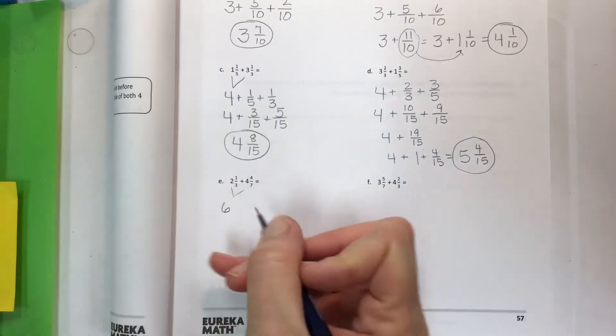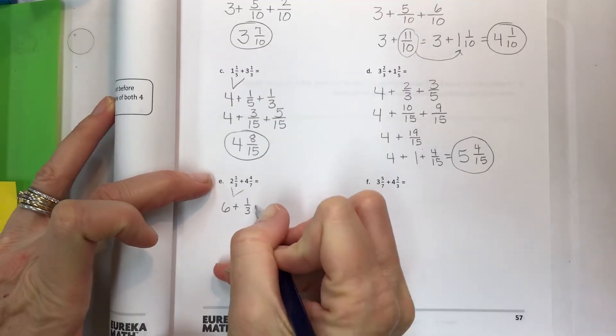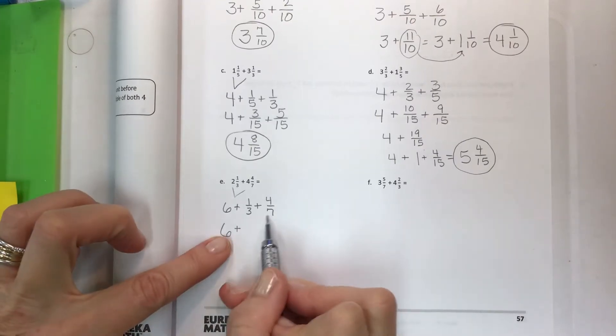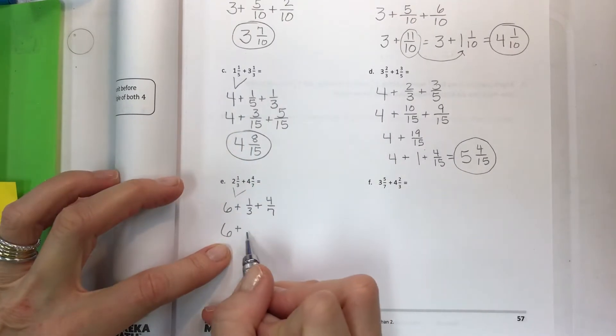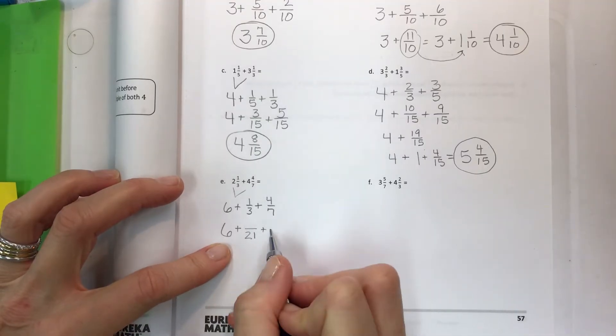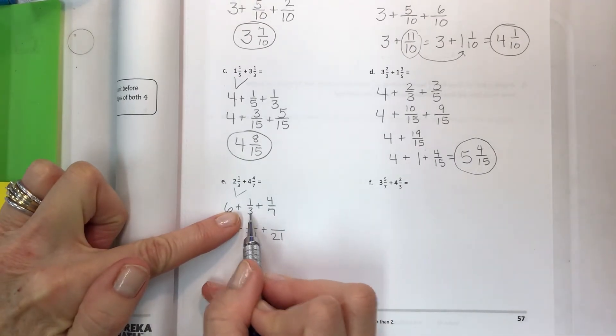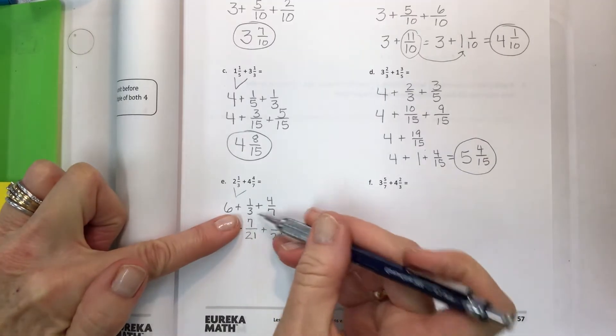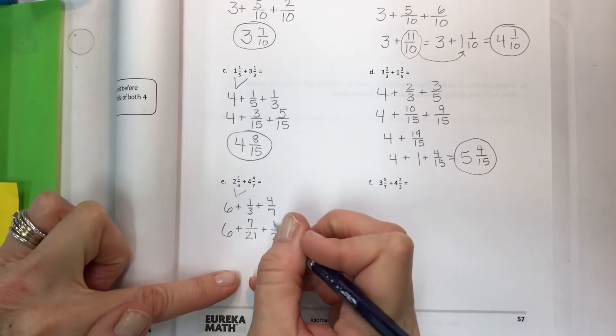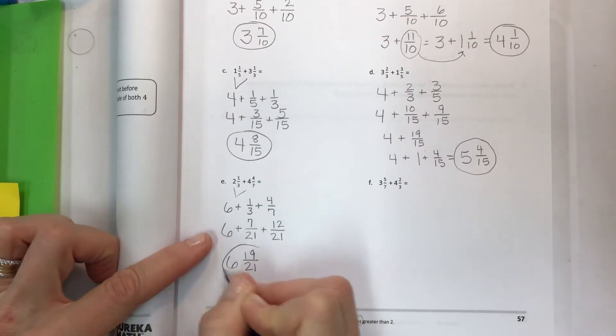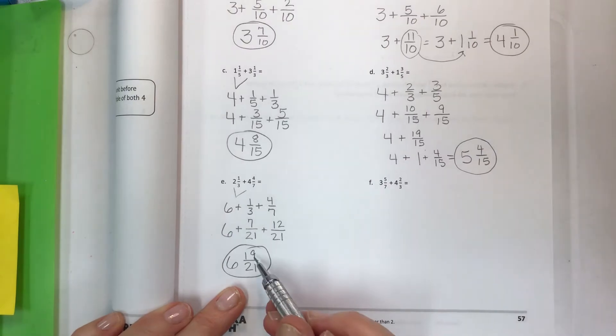Always be thinking about can I simplify my fraction, we cannot simplify this here. Always be thinking about can I simplify it, these are all in simplest form so we're okay to move ahead. Adding again four plus two, six, so easy plus one third plus four sevenths. So we're taking it apart making it nice and easy. Common denominator for these has been to multiply your two denominators by each other and that is the lowest common denominator. Now if seven is my scale factor for three then seven times one is seven and if three is my scale factor for seven then three times four is twelve.